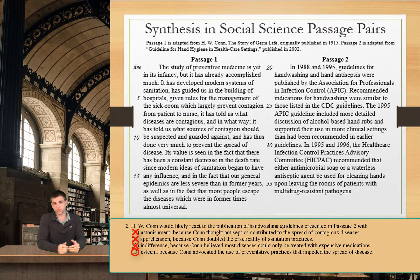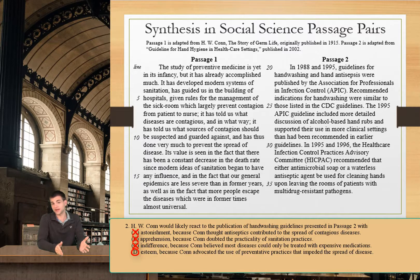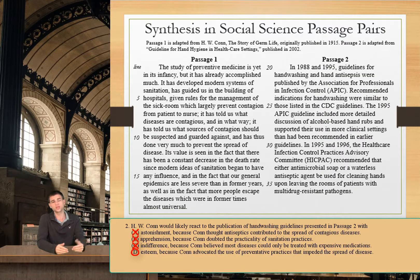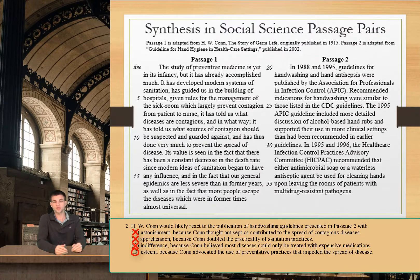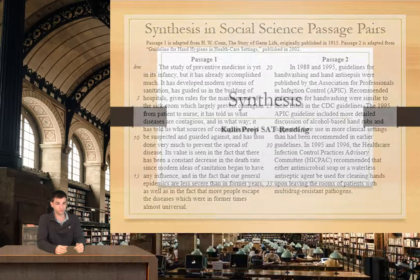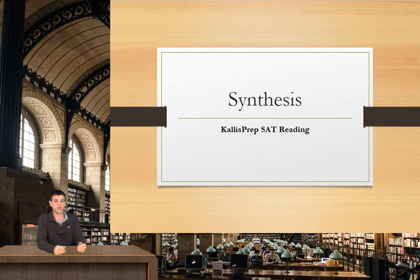When you approach synthesis questions on the SAT, keep in mind that they require a thorough understanding of both passages. When you come across a synthesis question, make sure you have a summary of each passage so you'll have an idea about how the two passages interact. Then you can answer the question in your own words and assess each answer choice based on the relationship you've already noticed. That always makes it easier to eliminate wrong answer choices and find the right one, especially when there are tricky choices that look correct but have some flaw. That about does it for today's lecture — we'll see you next time.